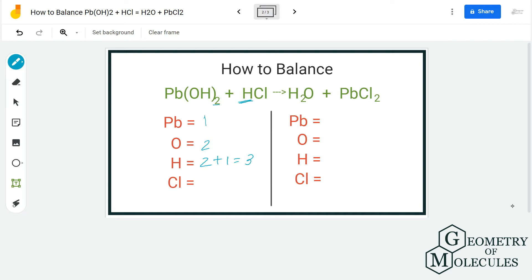Do not forget this hydrogen atoms and always make sure to count every atom on both the sides. So we have three hydrogen atoms and we have one chlorine atom.